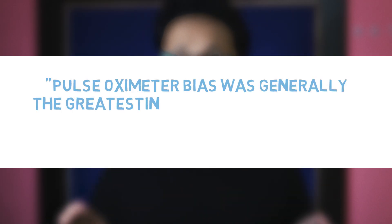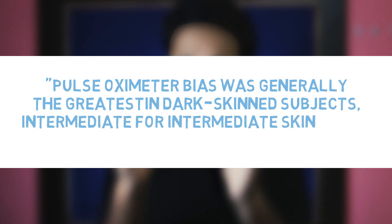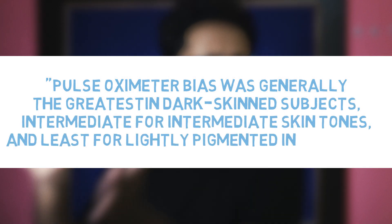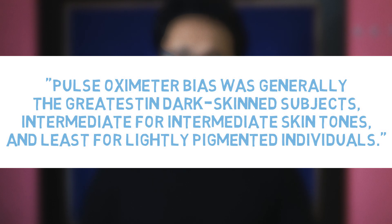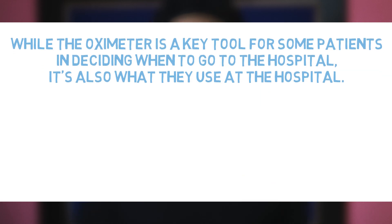This comprehensive data found a clearer pattern. Pulse oximeter bias was generally greatest for dark-skinned subjects, intermediate for intermediate skin tones, and least for lightly pigmented individuals. Racial errors grew significantly at lower oxygen levels, starting around 90 and growing widest in the 70s. In principle, the implications can be troubling.